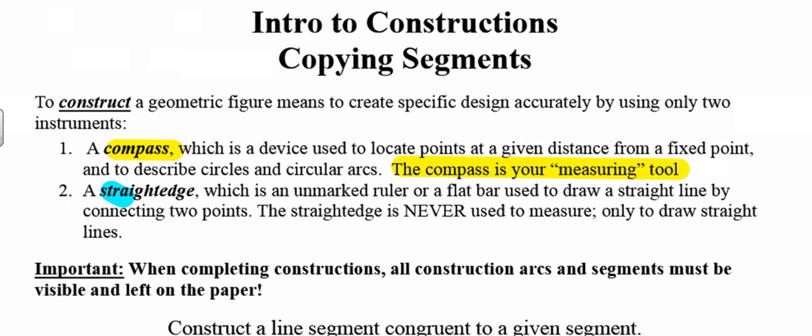But in constructions, we really don't use a typical ruler. Rather, we use a straightedge — an unmarked ruler or simply a flat bar whose only purpose is to draw straight lines. We never, ever use the straightedge to measure. The only instrument used to measure is our compass. So get yours out right now, pause the video, and go play. Draw big circles, little circles, medium-sized circles, intersecting circles, and circles within circles.